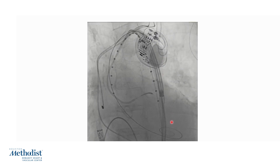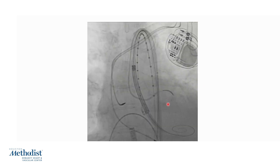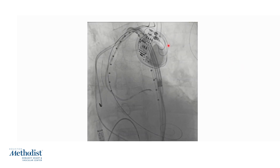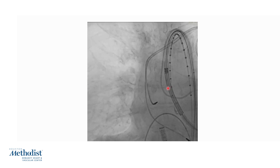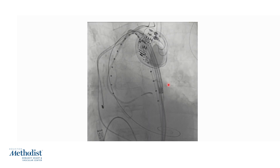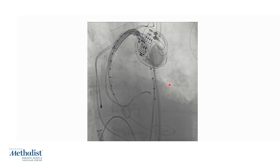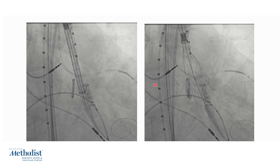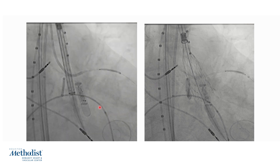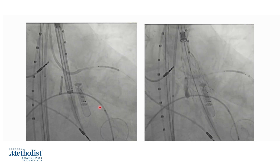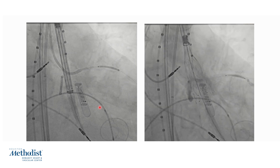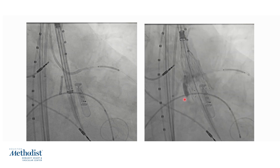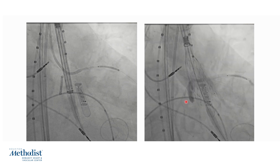Here is the Evolute valve, a self-expandable platform, which is advanced over a Safari wire placed into the left ventricle. We typically put the hat marker on the outer curve and bring it around the arch into the aortic root. By placing the hat marker on the outer curve of the descending thoracic aorta, we can achieve commissural alignment in the vast majority of patients. This image shows the Evolute valve positioned in the aortic annulus in the cusp overlap view, and here is the angiogram at 80% deployment showing good positioning and placement of the Evolute FX valve about three millimeters below the non-coronary cusp nadir.